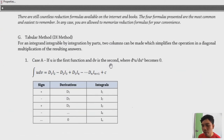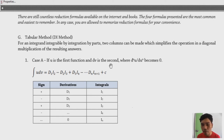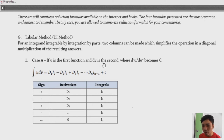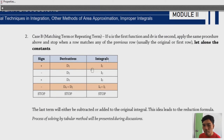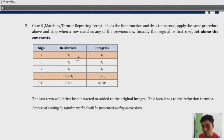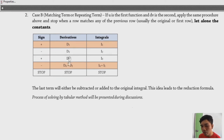Rule (g) introduces the tabular method or DI method, which is one of the best approaches for antiderivatives of more complicated functions. Case A: if u (the first function) reduces to zero after repeated differentiation (d^n u = 0), you use that condition to terminate the table. Case B: if both derivatives are repeating for u and v, you stop once a row matches a previous row.